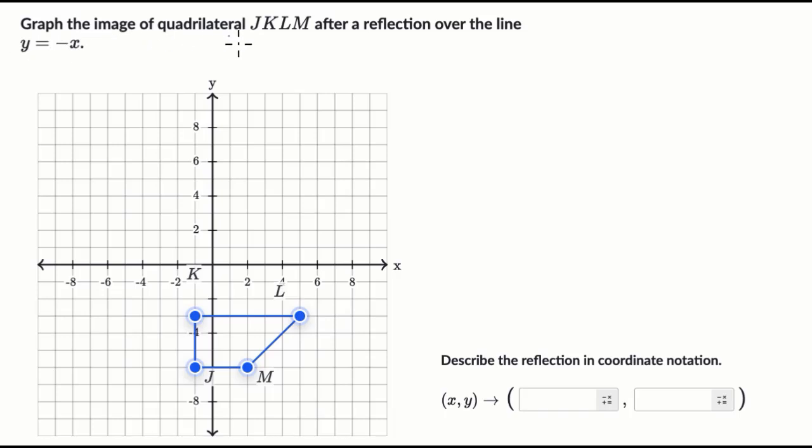We're told to graph the image of quadrilateral JKLM after a reflection over the line y equals negative x, and then describe the reflection in coordinate notation. So pause this video, have a go at it, then we'll do this together.